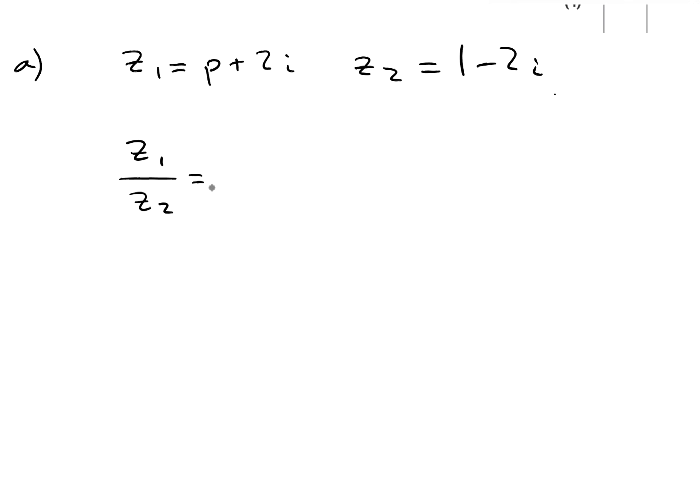Z1 equals P plus 2i and Z2 equals 1 minus 2i. We've been asked to find Z1 over Z2. The first thing is to replace Z1 by P plus 2i and Z2 by 1 minus 2i so we're actually working with it. Mathematicians aren't really a huge fan of fractions, so if there's an opportunity to simplify, they'll take it. We want to reduce this into something simpler, and the way we do that is to multiply by what's known as the conjugate.